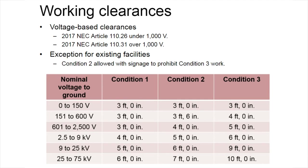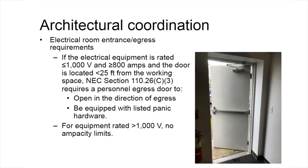NEC Exhibit 110.14 also has an exemption for existing buildings, allowing signage that prohibits exposing live parts on both sides of the workspace. Condition one is that exact situation — for 151 to 600 volt normal voltage to ground, a four-foot space is required from live parts to live parts. If an existing facility cannot maintain that, there is an exemption allowing a reduction to condition two of three feet six inches, provided a readily visible ANSI-compliant sign is placed at the location.